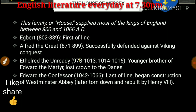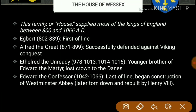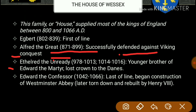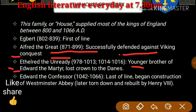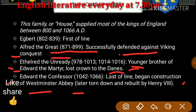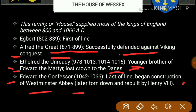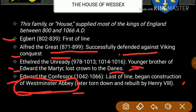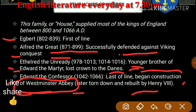Egbert was first of the line. Alfred the Great successfully defended against Viking conquest. Ethelred the Unready — you can remember the names. Younger brother of Edward and Martia lost the crown to the Danes. Edward the Confessor was last of the line and began construction of Westminster Abbey, which was later torn down and rebuilt by Henry.